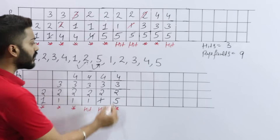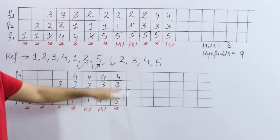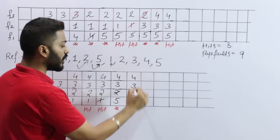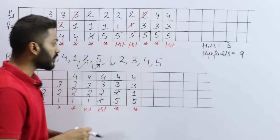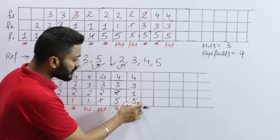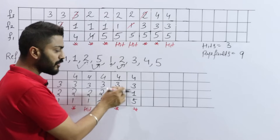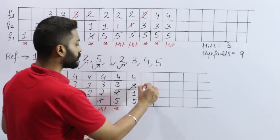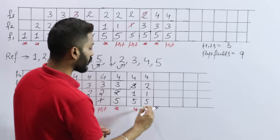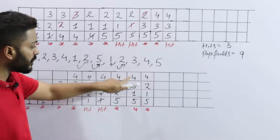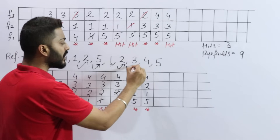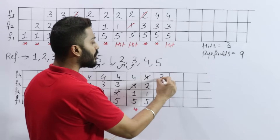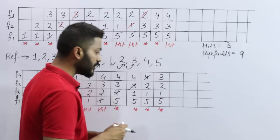Page number 5 is demanded. Page 5 is not present, so we replace frame 1 — page fault. Then page number 1 is demanded. Page 1 was just replaced, so it is not present — we replace frame 2 with page 1 — page fault. Page number 2 is demanded. Page 2 is not present — we replace frame 3 with page 2 — page fault. Page number 3 is demanded. Page 3 is not present — we replace frame 4 with page 3 — page fault.